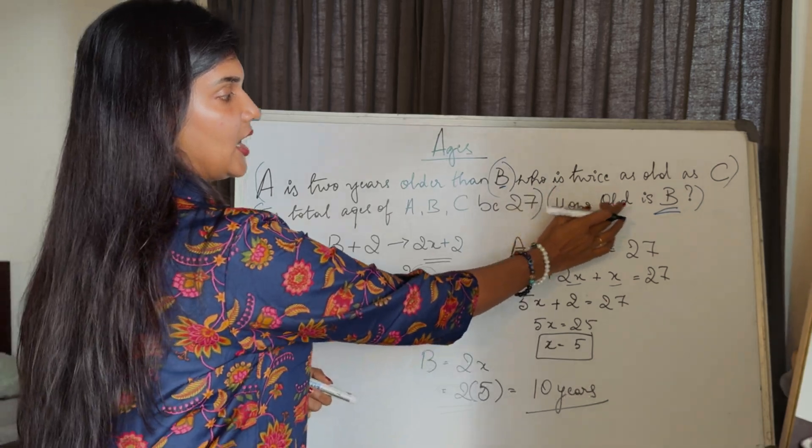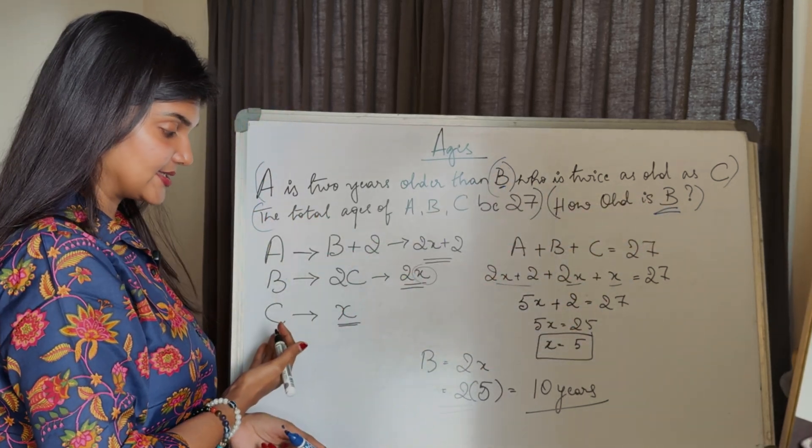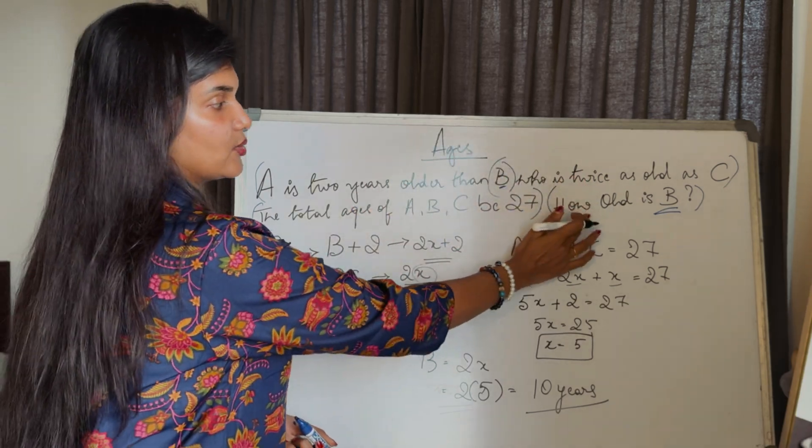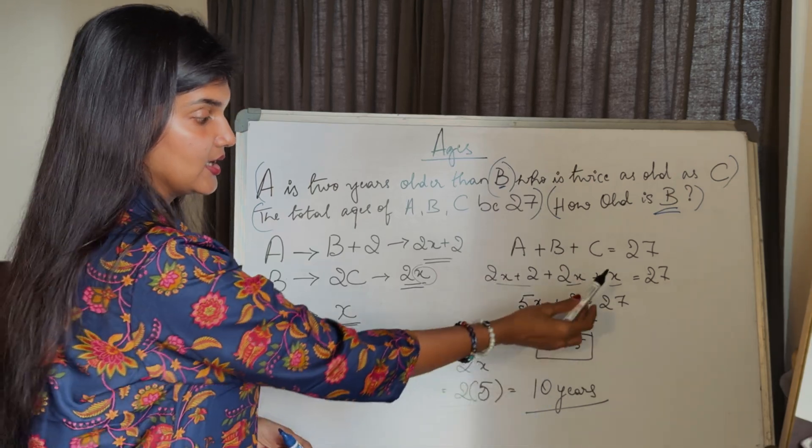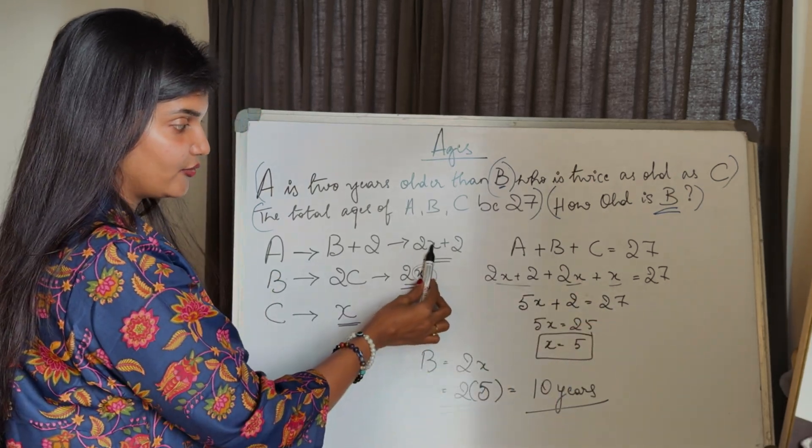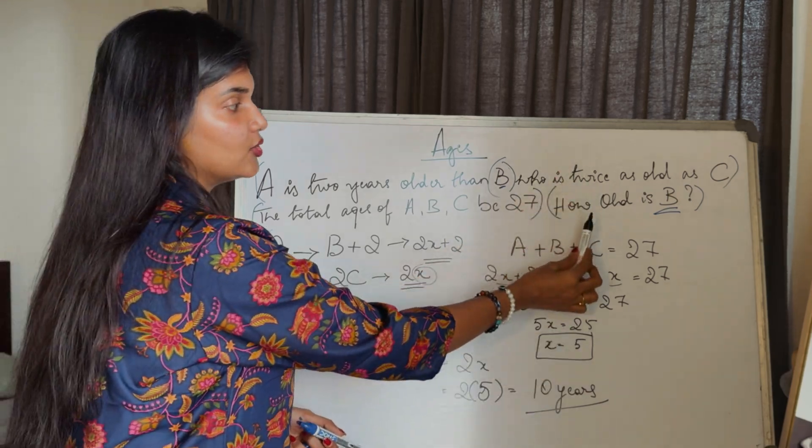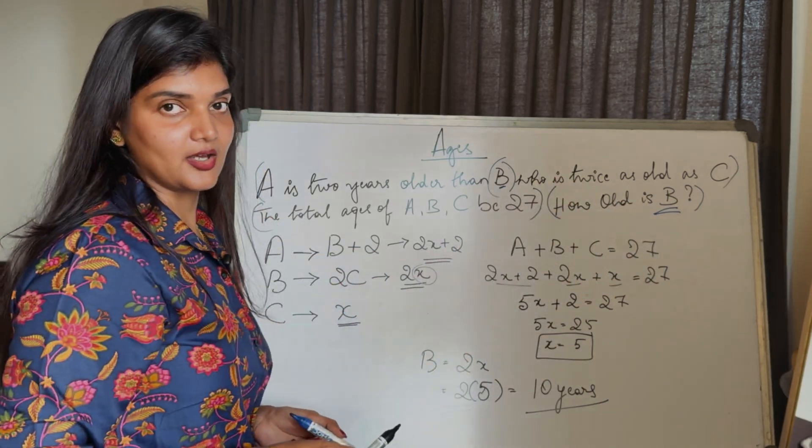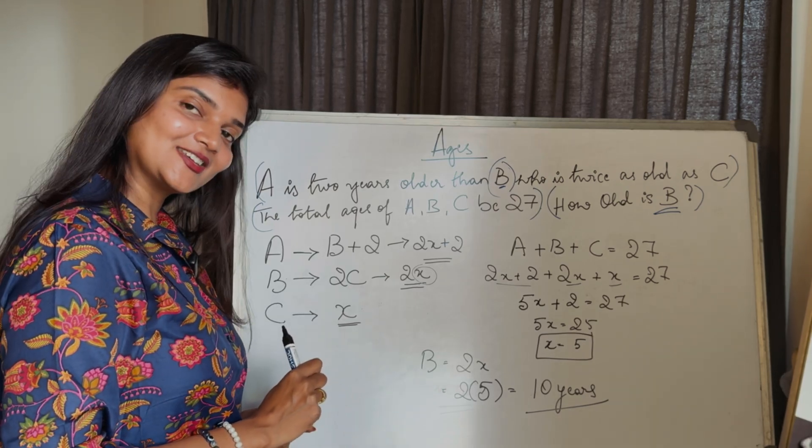Got it? They might ask how old is A or how old is C. You have to look at the last question carefully - what are they asking? You might have options like 10 years, 5 years, and also 12 years. So you have to read the final question carefully.